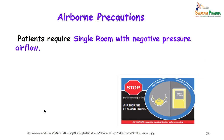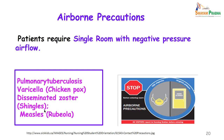Airborne precautions require a single room with negative pressure airflow. This precaution is taken for infections with tuberculosis, chicken pox, disseminated zoster, or measles. In a country like ours, we cannot afford negative pressure airflow and therefore we can just put these patients in isolation rooms.